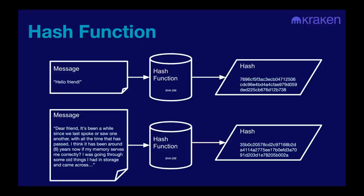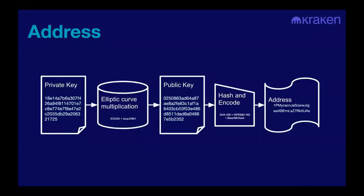Here is the process: you take the private key, apply elliptic curve multiplication to get a public key, hash it, encode it, and then you have a Bitcoin address.